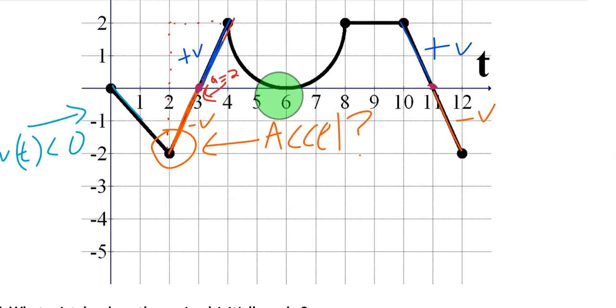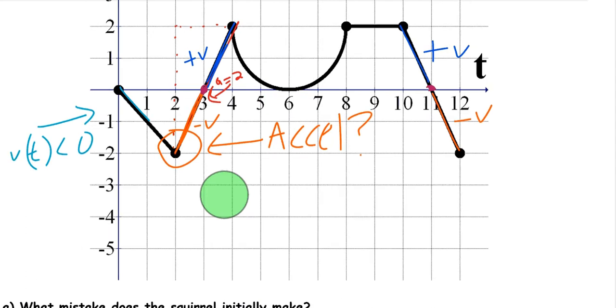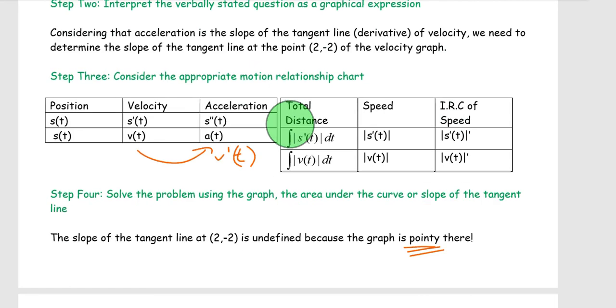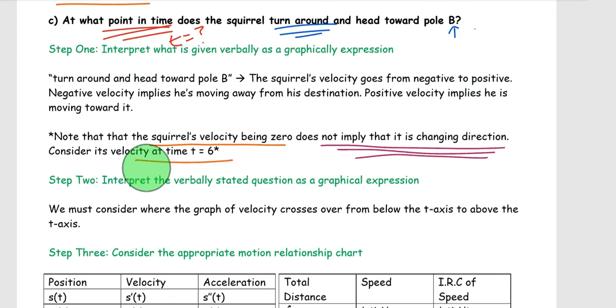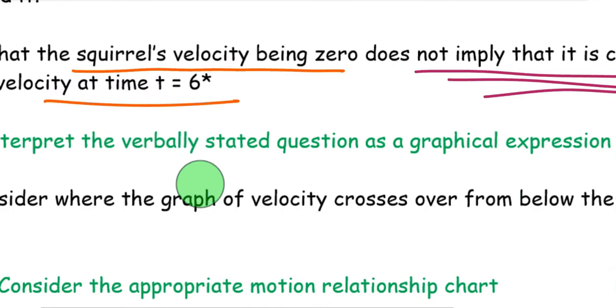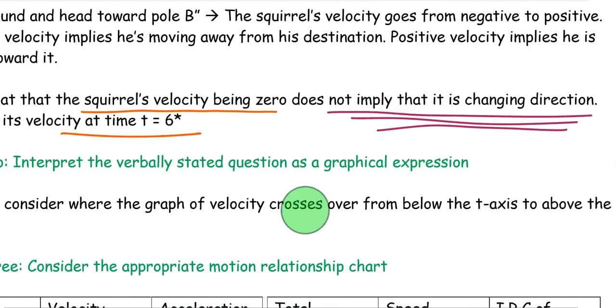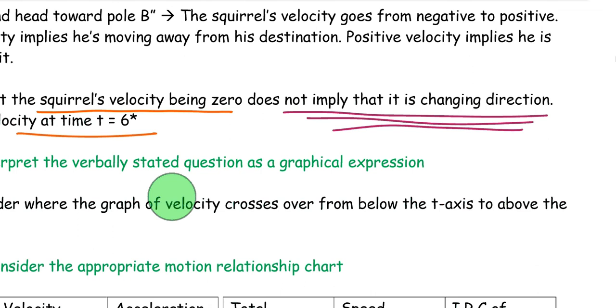Remember, if it changes direction, it will be zero. But just because the velocity equals zero doesn't mean it changed direction. Make sure you understand that. The converse of that is definitely not always true. So moving back then, step two, interpret. That was just hammering that concept home, because sometimes students get confused on that. Step two, interpret the verbally stated question as a graphical expression. We must consider where the graph of the velocity crosses over from below the t-axis to above the t-axis.